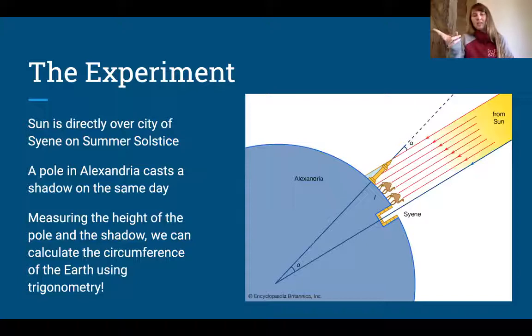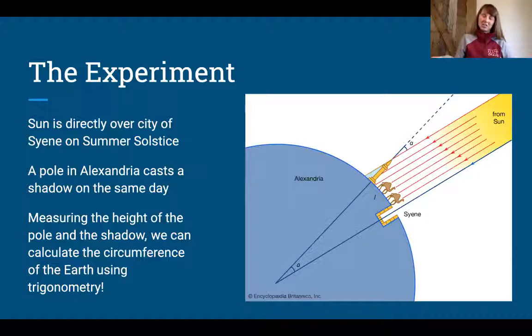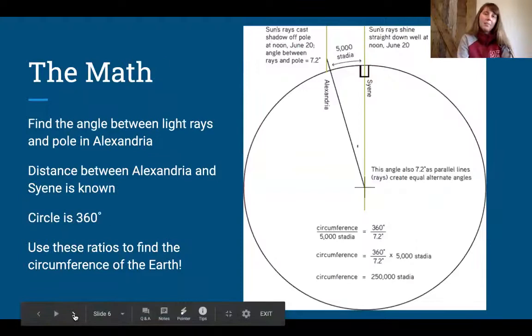So the experiment goes: the sun is directly over the city of Syene on the summer solstice. A pole in Alexandria casts a shadow on the same day. If we measure the height of the pole and the length of the shadow at the same time, we can calculate the circumference of the Earth using trigonometry. This is how we're going to do it—the math. Here we go.